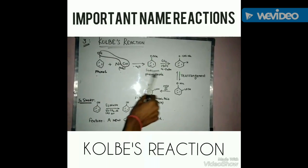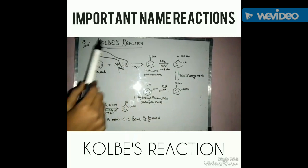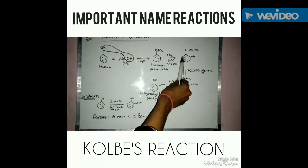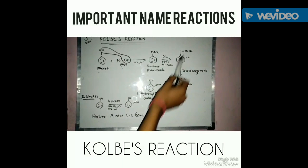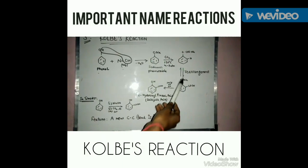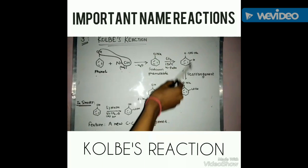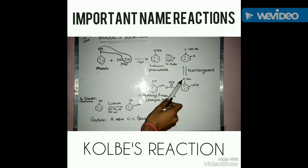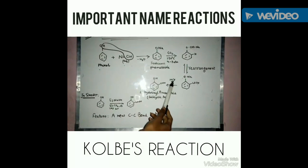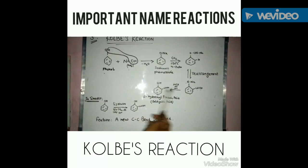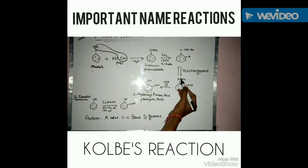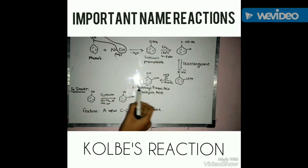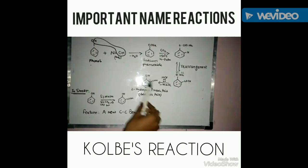Sodium phenoxide is then treated with CO₂. The important thing to note here — and to write in your examination — is the temperature and pressure range. After a rearrangement reaction, a –COOH group and an –ONa group are formed. Upon acidification using HCl or H⁺, NaCl is produced as a side product and 2-hydroxybenzoic acid is formed as the major product.